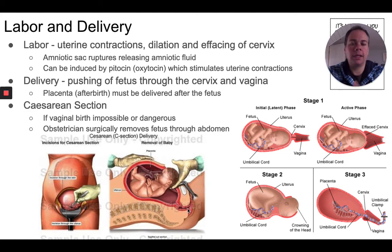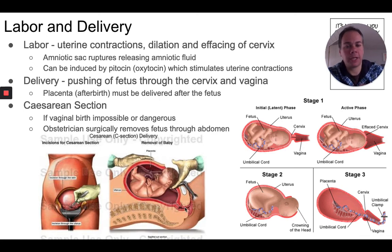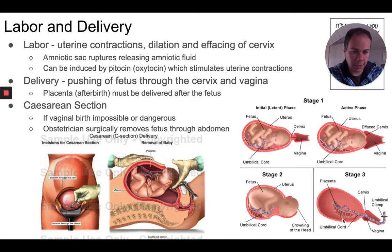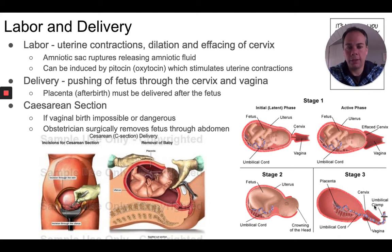Eventually, those contractions move the fetus down through the cervix and the woman gets into the delivery portion. Delivery is when the woman pushes the baby through the cervix, through the vagina, and out of her body. After the fetus is born, the placenta breaks away from the wall of the uterus and the woman then delivers the placenta as well — it comes out of the woman's body after the fetus.